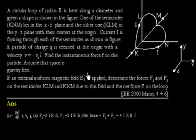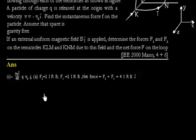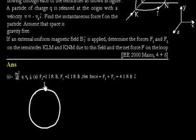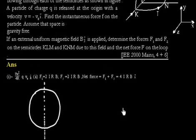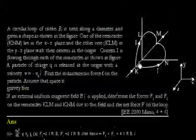This is a quite easy problem. We have a circular loop of radius R that is bent along the diameter. So this circular loop, bent along the diameter, will now lie in two planes — it is slightly difficult to visualize but essentially the bented loop now has two halves in different planes.